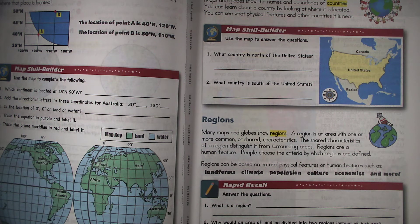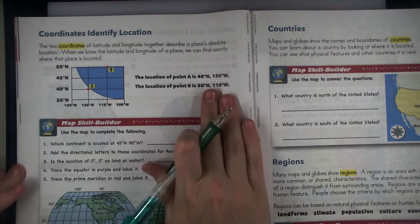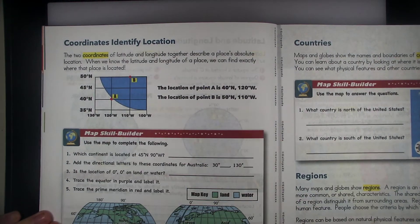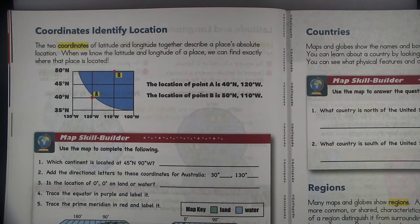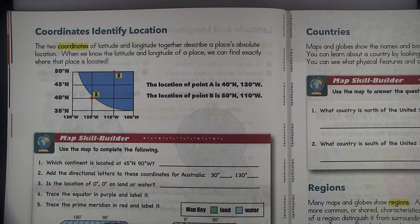Open your books to pages 16 and 17. We're going to learn about coordinates. Coordinates identify location. The two coordinates of latitude and longitude together describe a place's absolute location. When we know the latitude and longitude of a place, we can find exactly where that place is located.